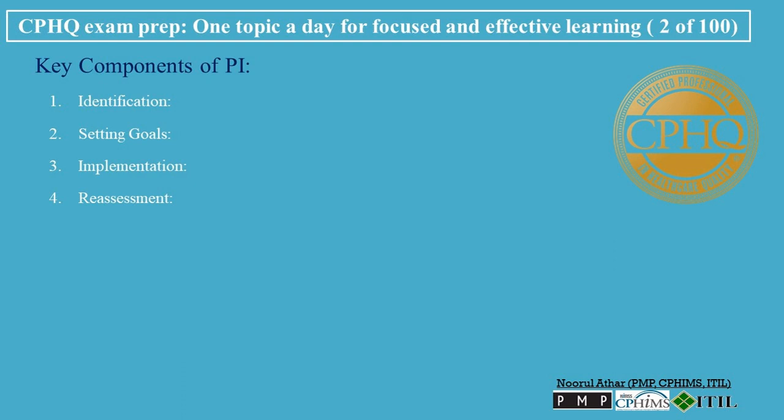Step 4 — Reassessment: After implementing changes, it's essential to measure the outcomes. If the desired improvements aren't observed, the process needs refining. If the goals are achieved, processes should be put in place to maintain those improvements. Step 5 — Sustainability: This involves ensuring that improvements are not just short-term gains. Continuous monitoring, training, and adaptation are needed to ensure that enhancements remain effective over time.